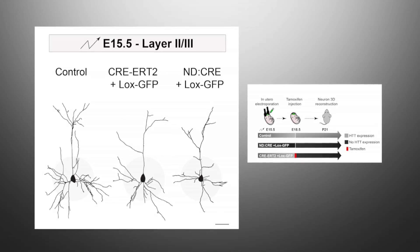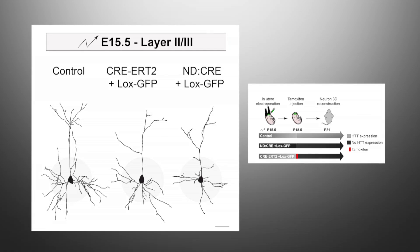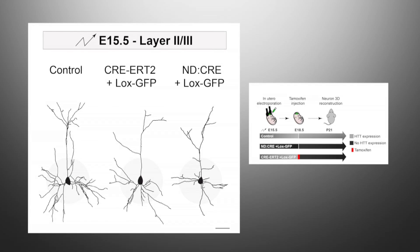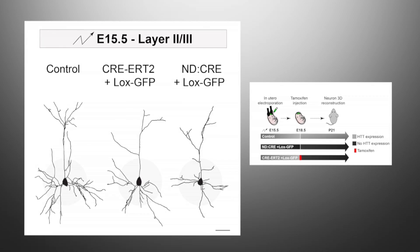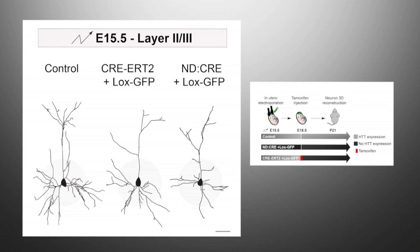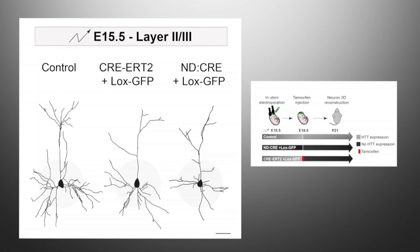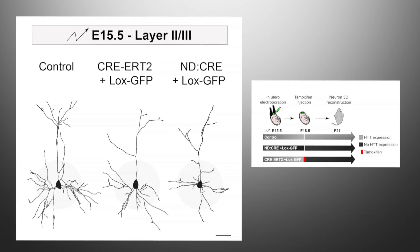Postnatal depletion of Huntington induced a decrease of dendritic arborization. The decrease was even stronger when Huntington was depleted from embryonic development.